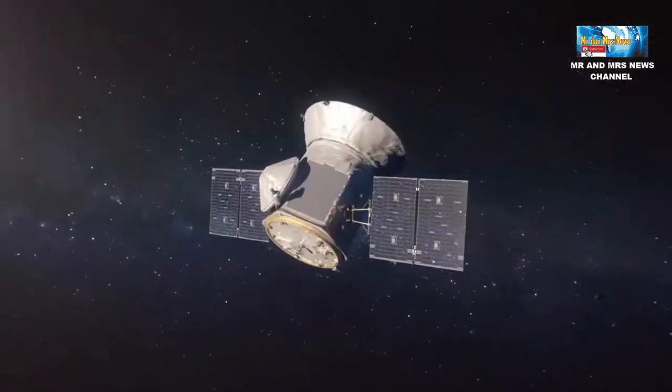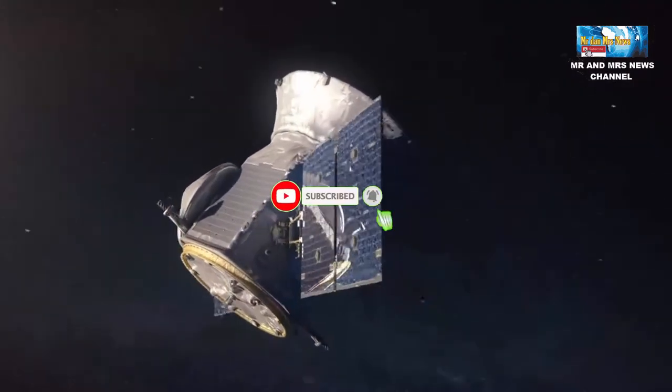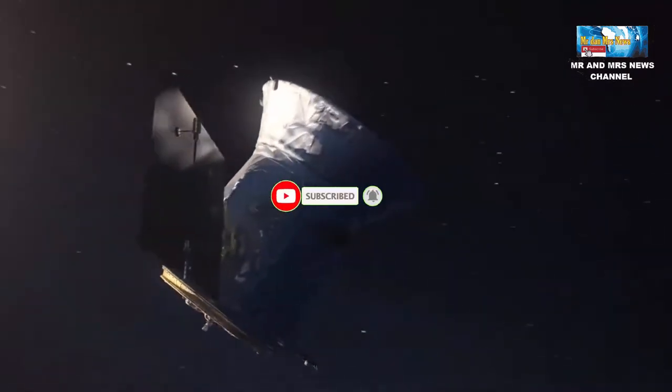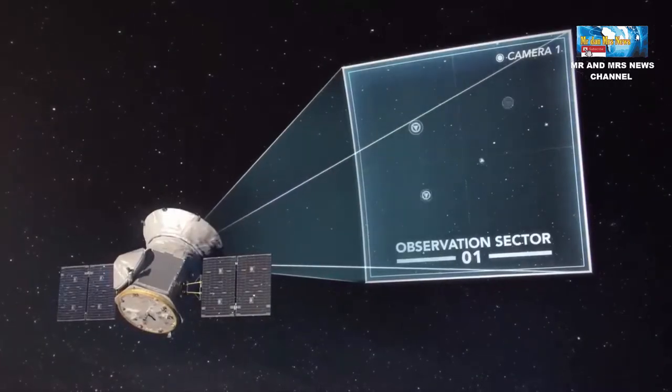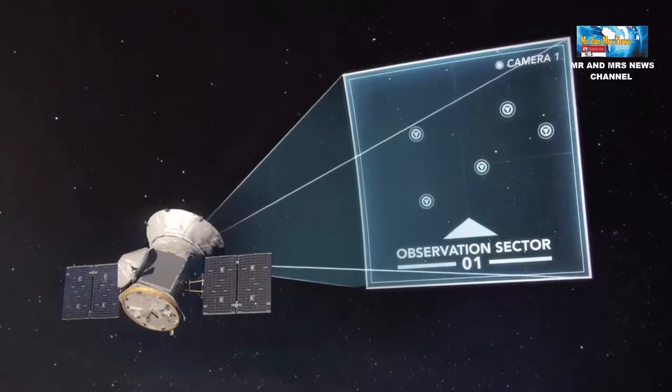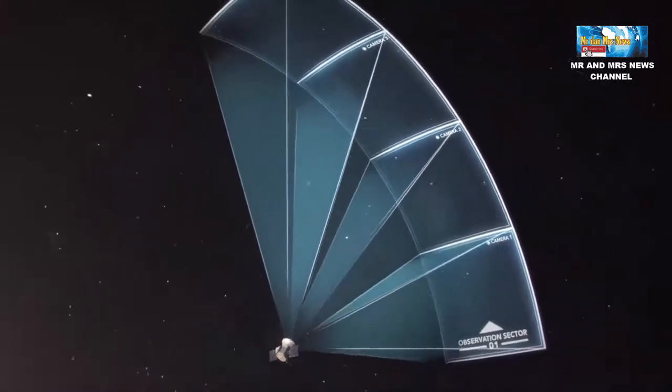TESS tidak secara khusus dirancang untuk menemukan exoplanet yang mengorbit jauh seperti TOI 2180B. Transit planet biasanya terlihat algoritma komputer, tetapi dalam kasus ini, karena mengorbit jauh dari bintangnya, planet tersebut hanya membuat satu transit dalam data.